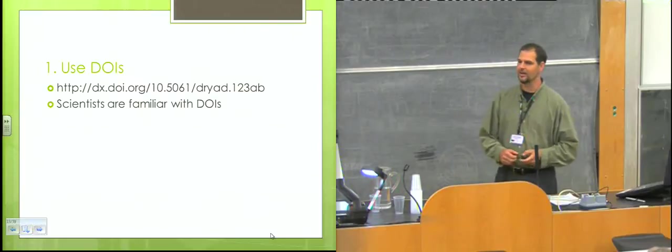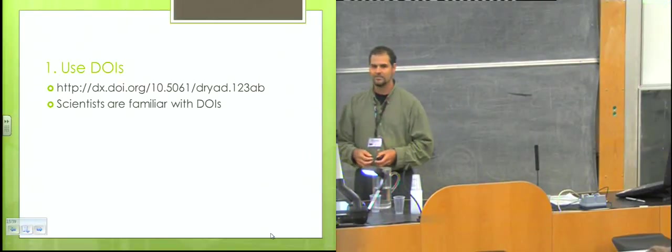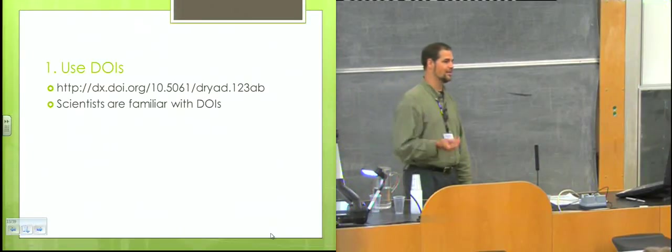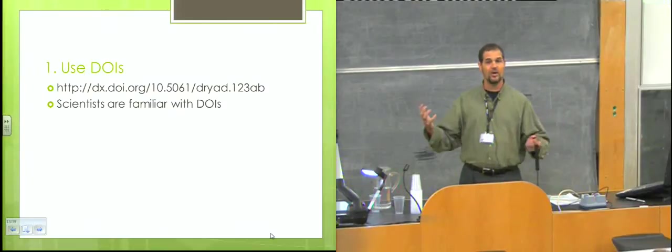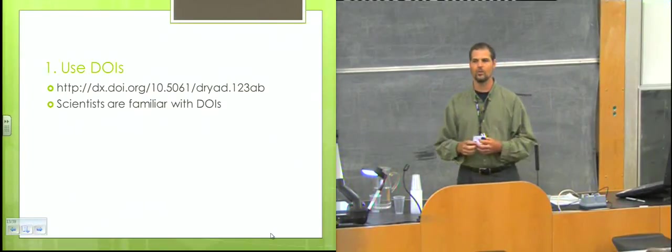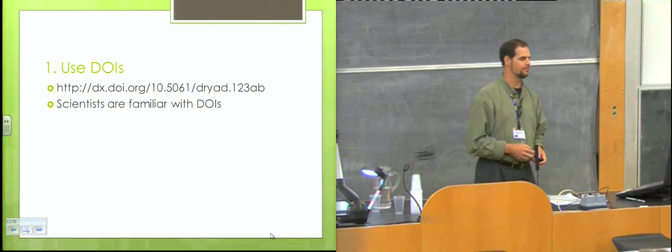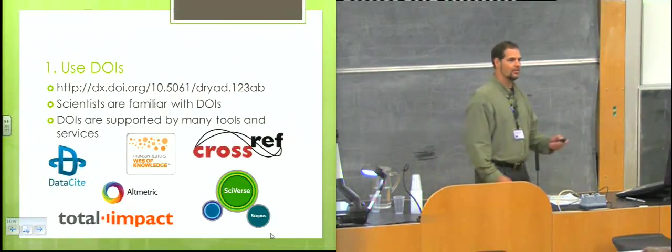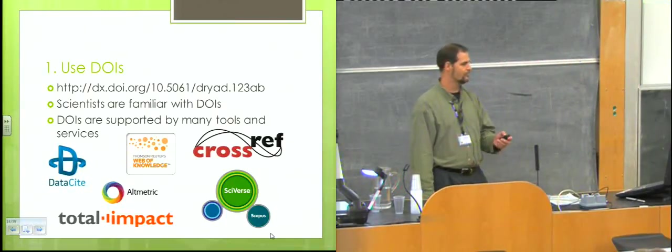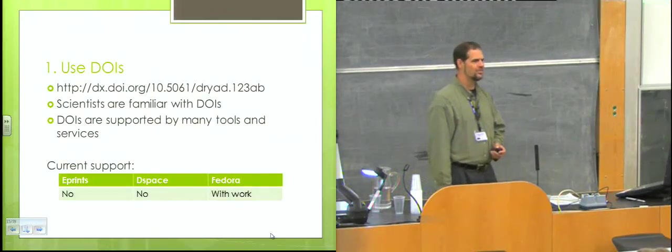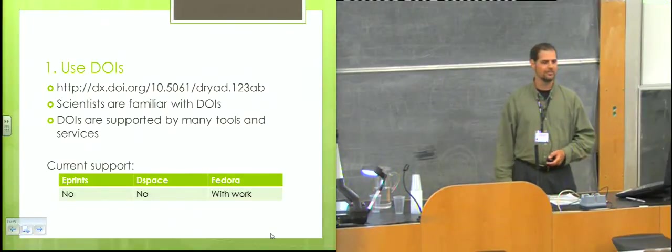Number one, use DOIs. DOIs are very familiar to scientists. They're becoming familiar to people who are not scientists. Scientists don't understand a handle. They don't understand a PURL. They don't understand an info URI. Just use a DOI. When you use a DOI, you get a certain amount of weight accorded to your citation. People think, Aha, this is a DOI. Someone took care to assign a DOI to it, so it's important. And you get a big bonus that lots and lots of services and tools are compatible with DOIs, understand how to work with DOIs. So in repositories, the repository platforms that are commonly represented at this conference don't really provide a lot of support for DOIs. Need some work.